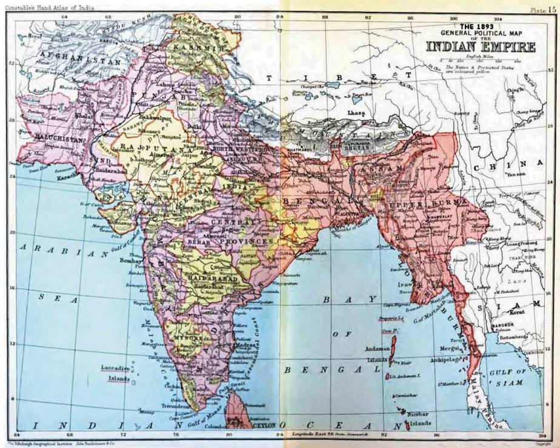Under the terms of the treaty, all transfers of property and establishments were to take place on 1 March 1825. By the middle of 1825, therefore, the Dutch had lost their last trading posts in India.